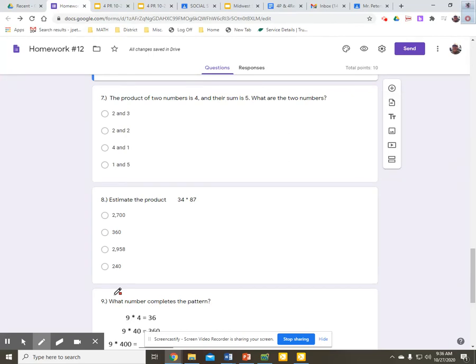Number seven. The product of two numbers is four, and their sum is five. What are the two numbers?